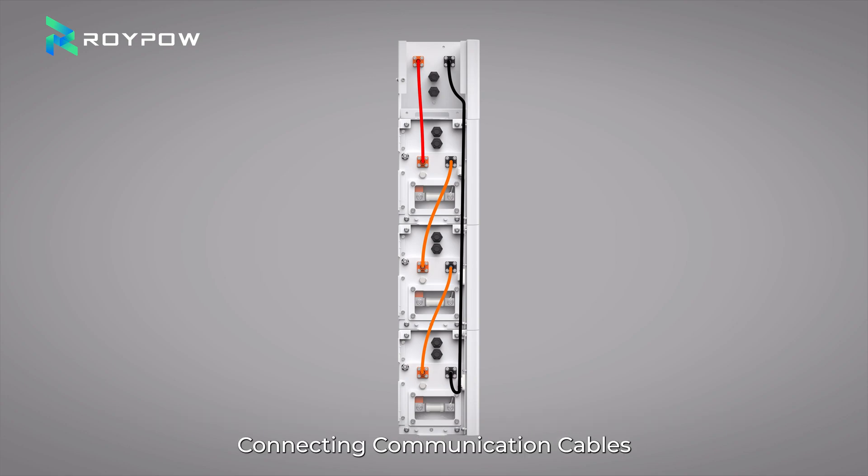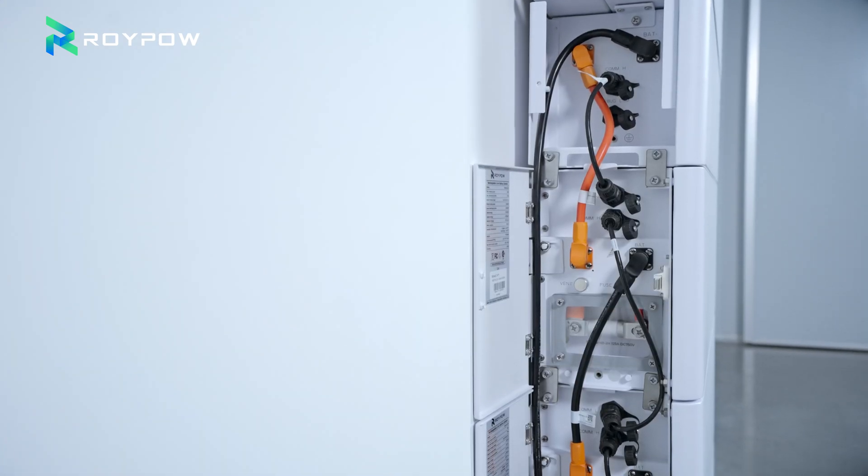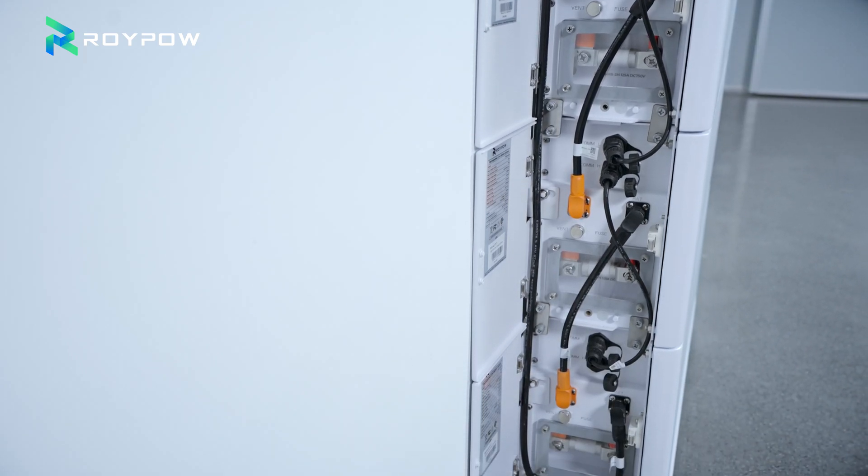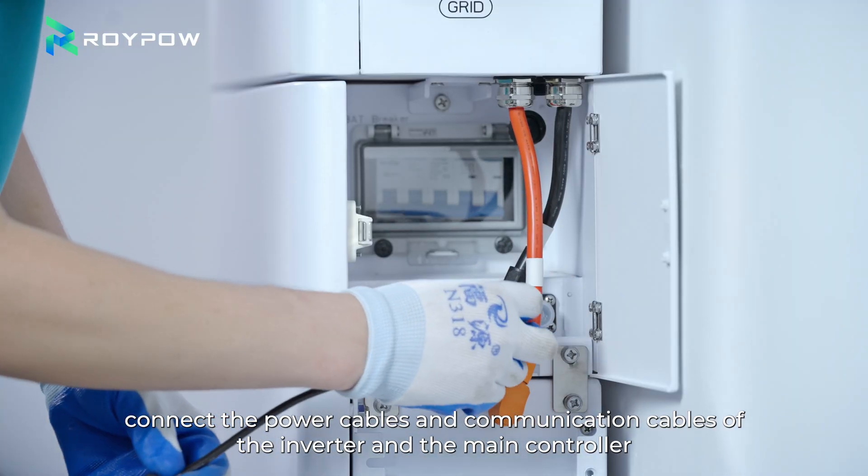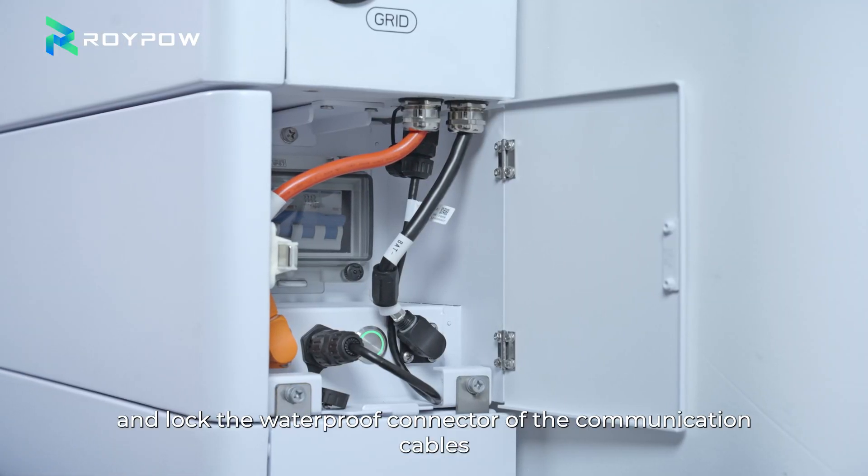Connecting communication cables. The COM-H interface of the main control box is connected to the COM-L interface of the battery. The COM-H interface of the battery is connected to the COM-L interface of the next battery, and so on. Open the right cover, connect the power cables and communication cables of the inverter and the main controller, and lock the waterproof connector of the communication cables.